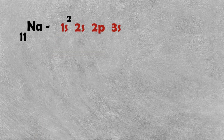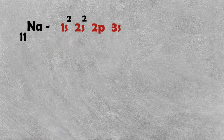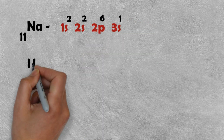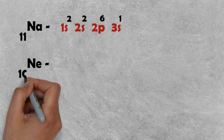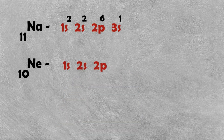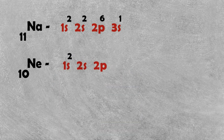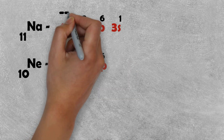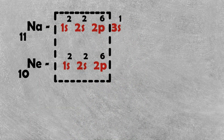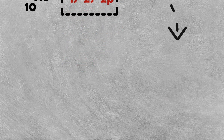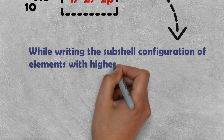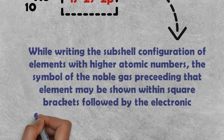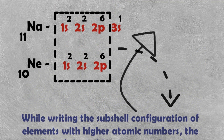We have two elements. The electronic configuration is 1s2, 2s2, 2p6, 3s1. The electronic configuration is 1s2, 2s2, 2p6. The electronic configuration continues: 3s2, 4s2, and so on up to 5s2.